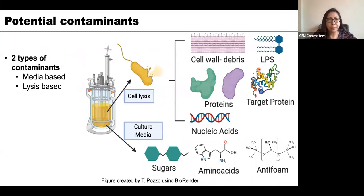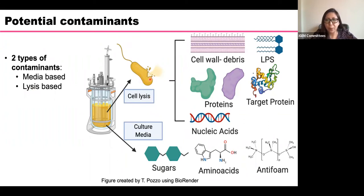With your target protein or compound, you will potentially get two types of contaminants. Contaminants from the media can include sugars, amino acids, or chromophores — colored compounds from the media. And when you do cell lysis to extract the protein of interest, you will also have cell wall debris, lipids, other proteins that look like your protein, and a lot of nucleic acids. All of these need to be removed.